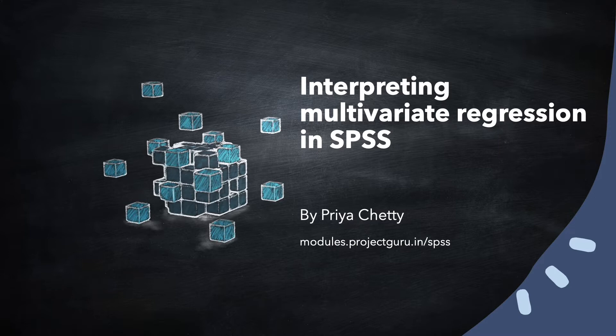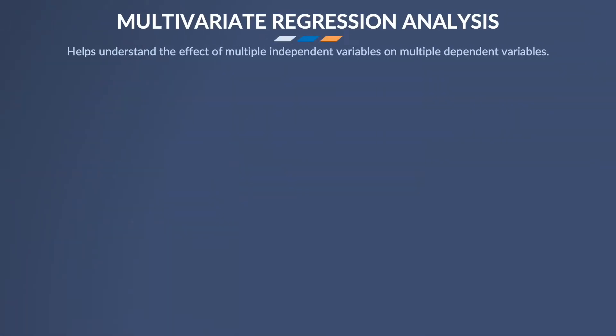Welcome to another tutorial on SPSS. Today we are going to learn about multivariate regression analysis, which is used in situations where problems have many factors and you want to check how all of them cause or affect one another. Linear regression is a common statistical test that considers just one dependent variable or a single outcome, whereas multivariate regression checks the impact of many independent variables on many dependent variables.